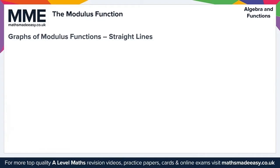Moving on now to graphs of modulus functions for straight lines. There are three types of modulus graphs you may be asked to draw. The first type is y equals the modulus of f(x), where the modulus is around the full function. Negative values of f(x) are made positive by reflecting the negative section of the graph in the x-axis, which restricts the range to the modulus of f(x) being greater than or equal to zero, or a subset thereof.